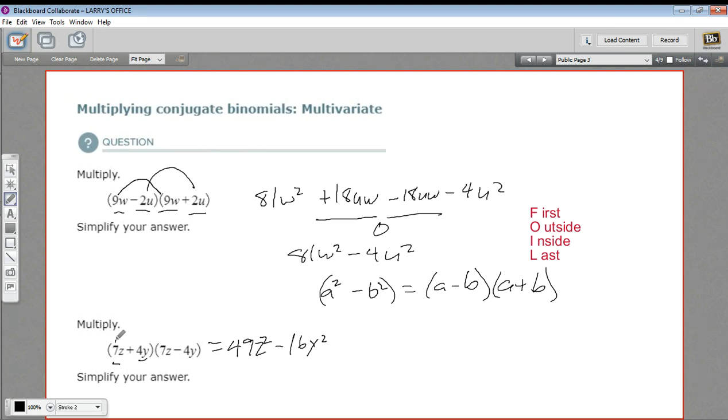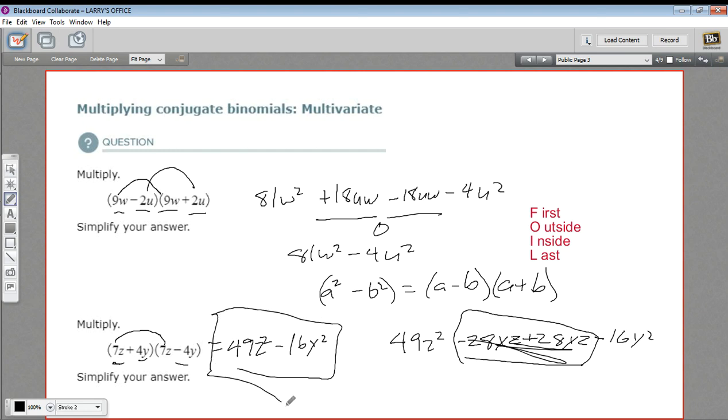But let's go ahead and FOIL this out just to double check. So multiply the first terms. 7 times 7 is 49, z times z is z squared. Your outside terms, 7z and negative 4y, that's minus 28yz. And the inside terms, 4y times 7z is plus 28yz. And the last terms, 4y times a negative 4y is negative 16y squared. Aha! And again, these two add up to zero. So we end up with 49z squared minus 16y squared. Just what we had predicted. So that is how to multiply conjugate binomials.